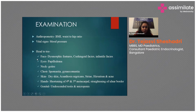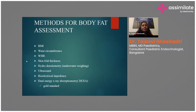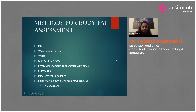Acanthosis nigricans is velvety, dark, thickened skin due to insulin resistance. Shortening of the fourth and fifth metacarpals is characteristic of pseudo-hypoparathyroidism. Straightening of the ulnar border is seen in syndromic causes such as Prader-Willi syndrome. Also look for undescended testes and micropenis, characteristic of growth hormone or multiple pituitary hormone deficiency. Methods of estimating body fat include waist circumference, waist-to-hip ratio, skinfold thickness, hydrodensitometry, ultrasound, bioelectrical impedance, with DEXA scan as the gold standard.